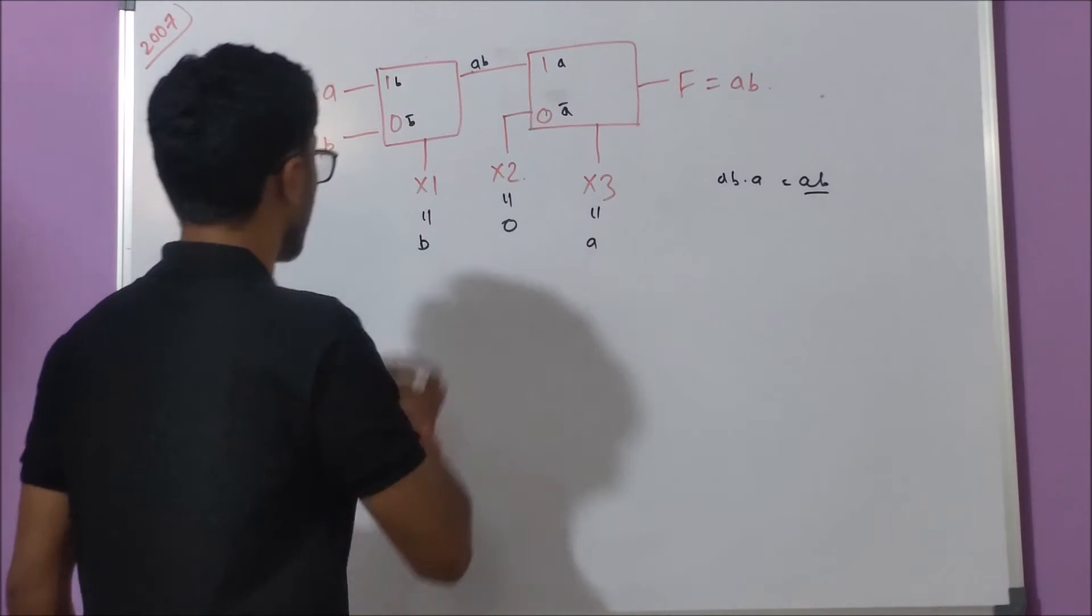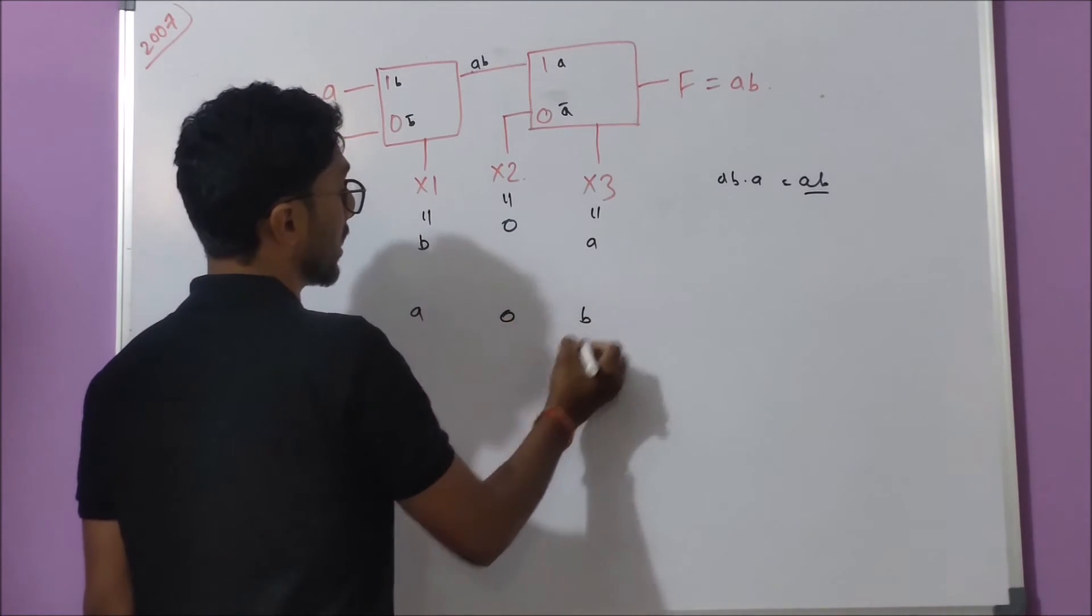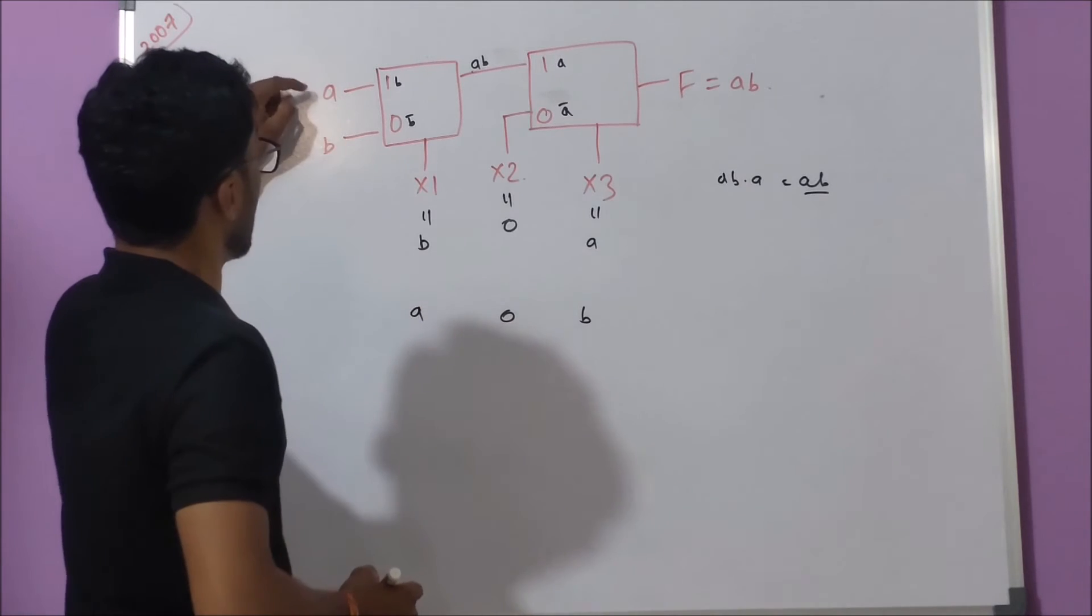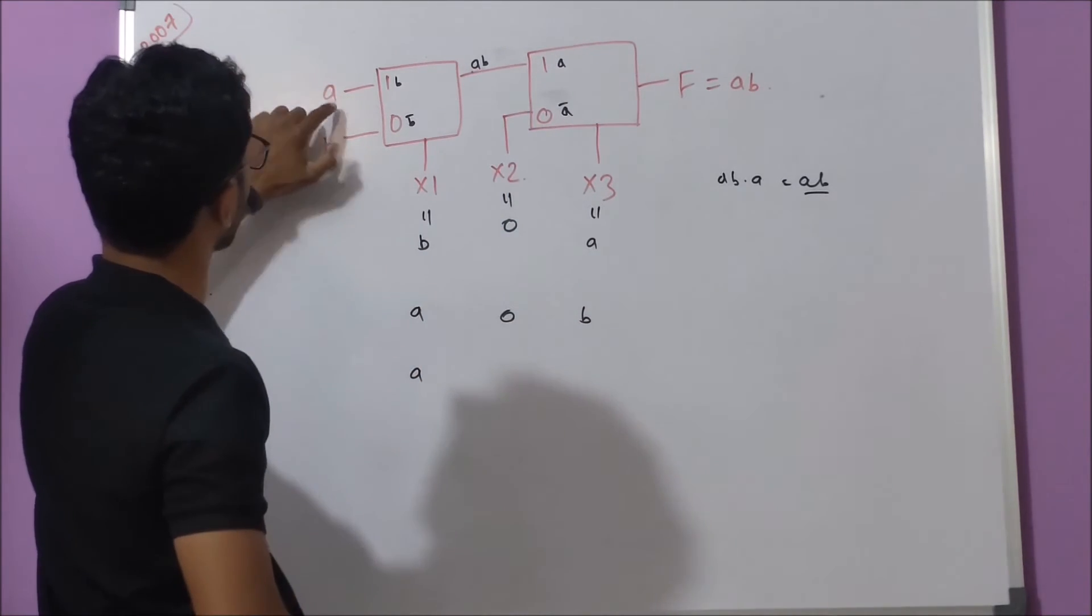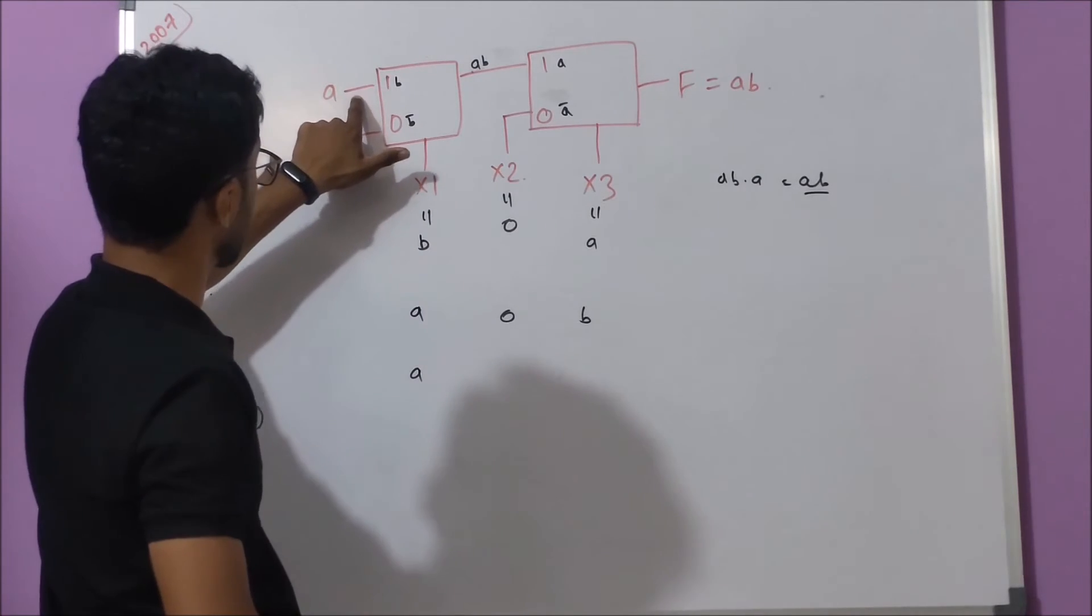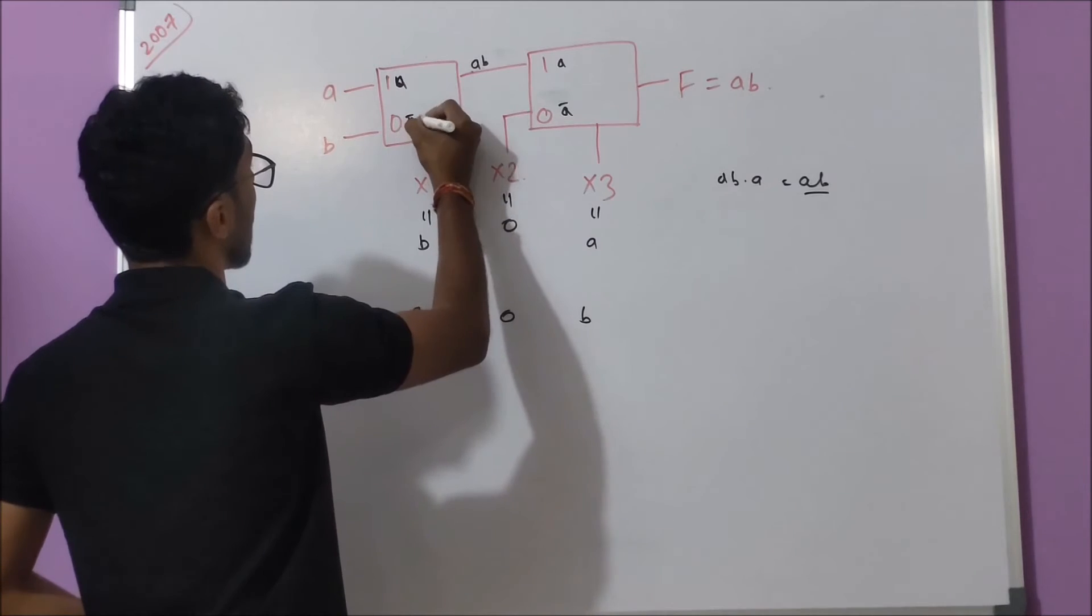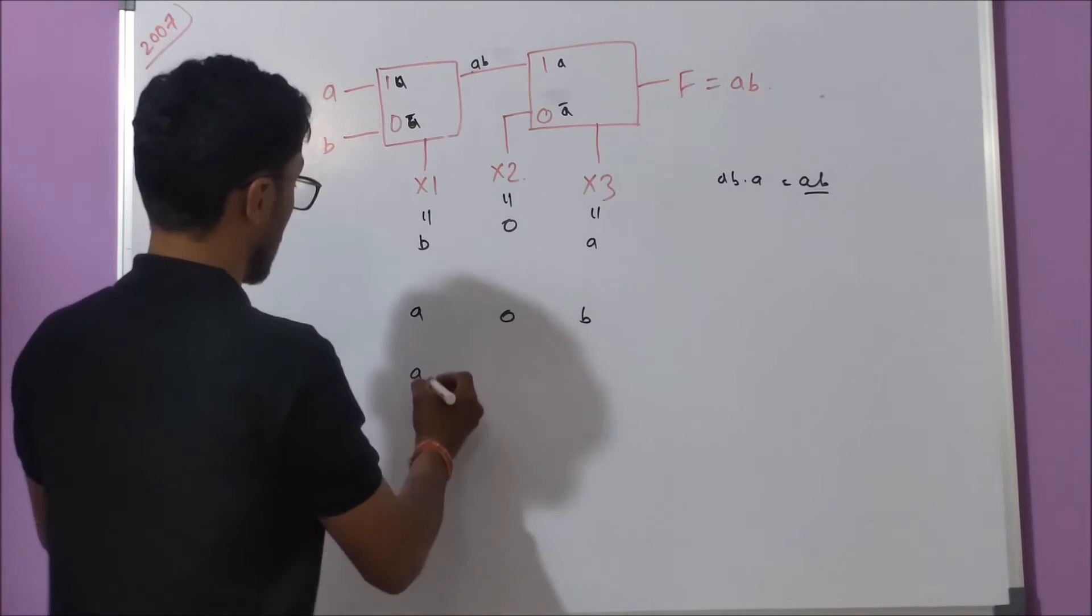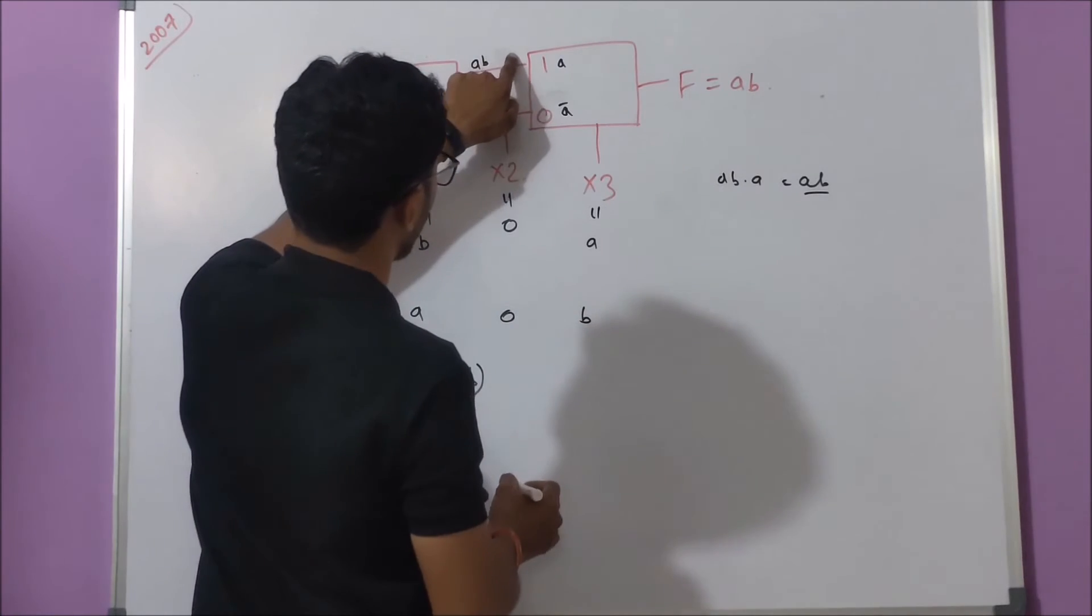So the output is a bar here. At x1, if we put 0, then my final output will be a, because here a or a bar, a ho jayega. Here a bar ho jayega, then a bar into B plus a bar B, which will be our output.